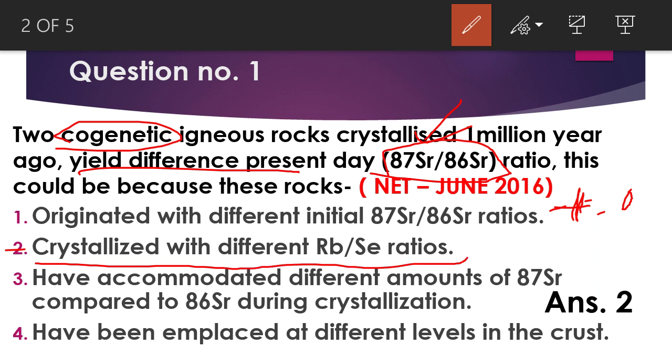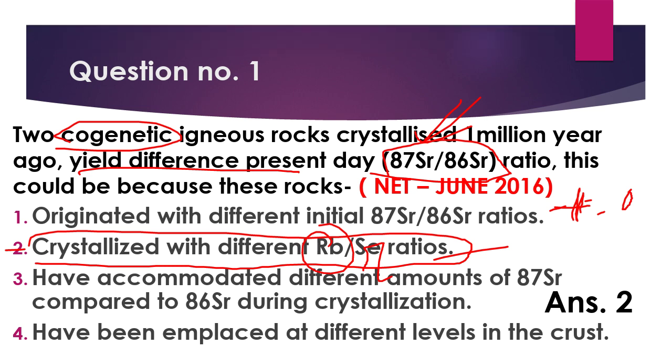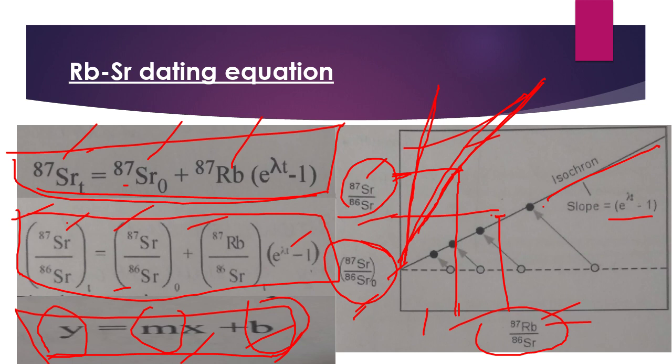So what will be the answer? The answer will be your second option: different rubidium to strontium ratio. This is actually Rb/Sr. They are formed with different rubidium-strontium ratios, and due to this rubidium disintegration, you have a change in the ratio of 87Sr to 86Sr. Here, second option is your right answer. Now comes the second question.